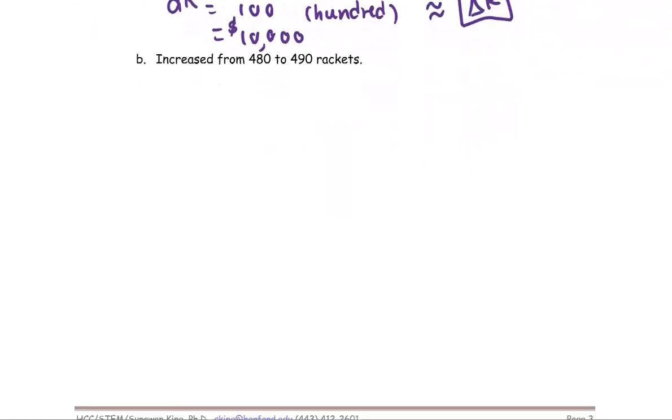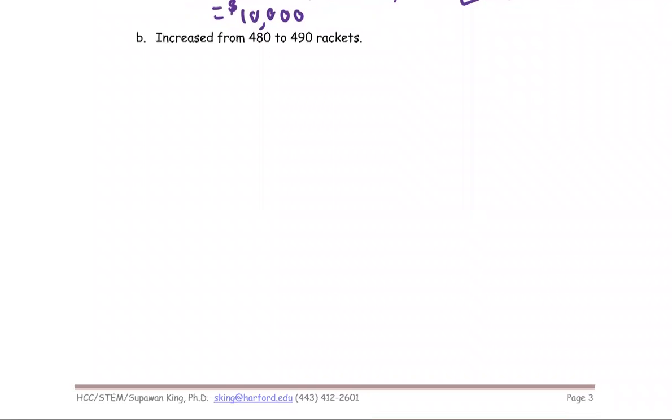For the second part is a similar way. So we're going to use the first point as 480 and the second point as 490. The R prime is the same, which is 20 minus 1 over 15 times x.